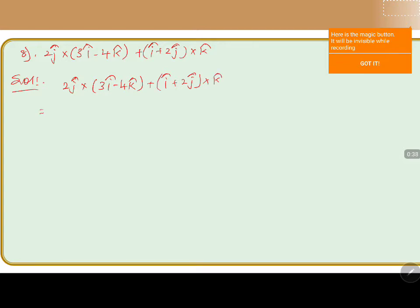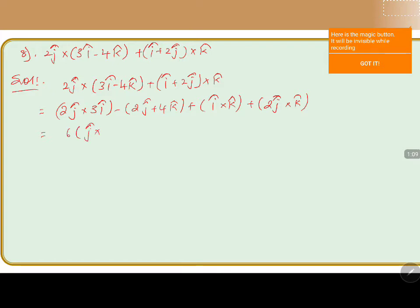This can be written as 2j cap cross 3i cap minus 2j cap plus 4k cap plus the next one is i cap cross k cap plus 2j cap cross k cap. So this can be written as 2 into 3 = 6 into j cap cross i cap minus 2 into 4 = 8 j cap cross k cap plus i cap cross k cap plus 2 into j cap cross k cap.